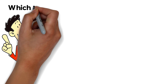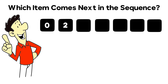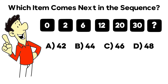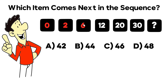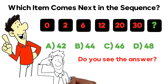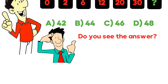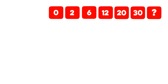Very frequently on the test, you might be asked to detect a pattern in a sequence. In this question, you're asked which item comes next. The sequence shown is: 4, 0, 2, 6, 12, 20, 30, and then a missing item. You need to select from four choices: A — 42, B — 44, C — 46, and D — 48. Do you see the answer? It may or may not be obvious depending on your pattern detection skills.